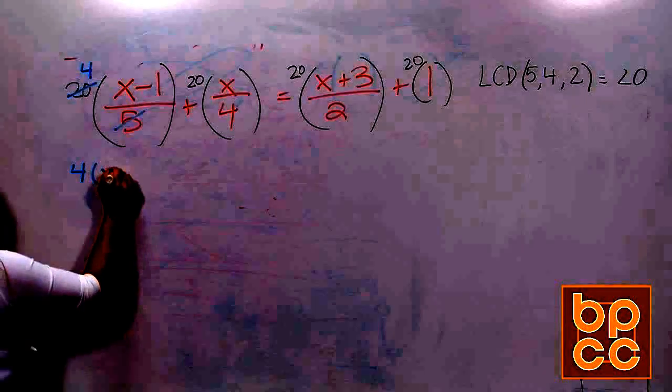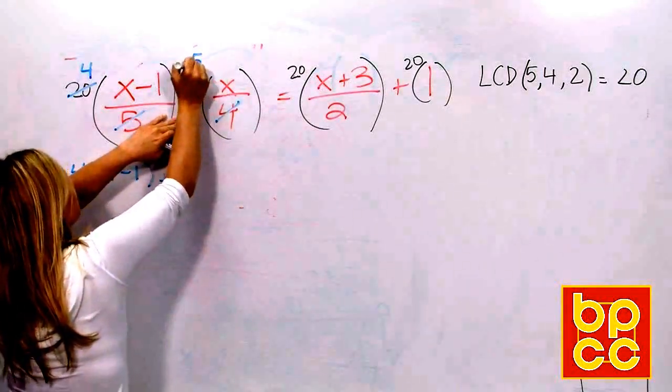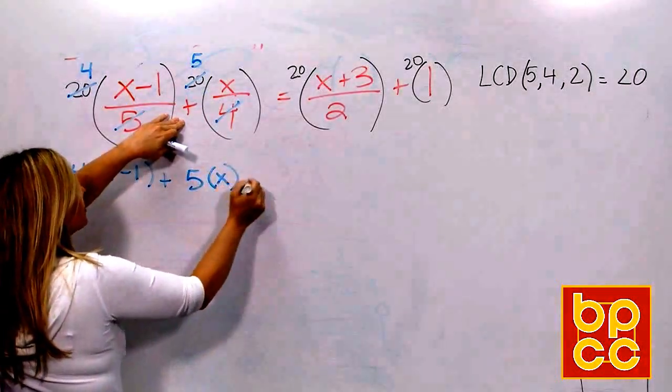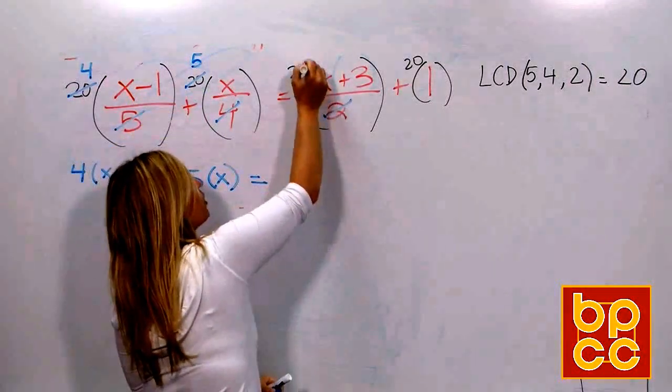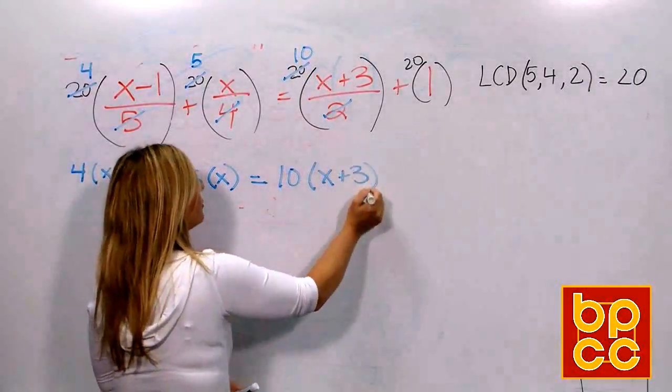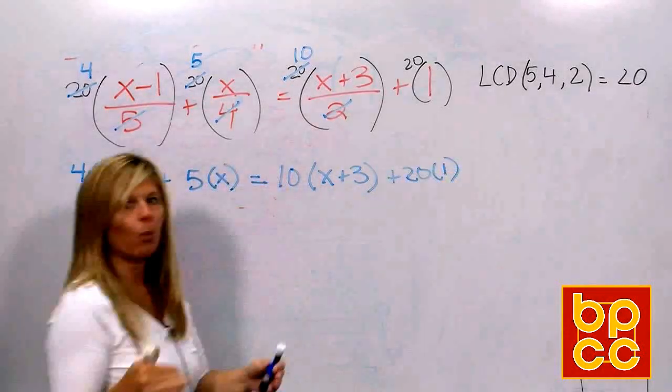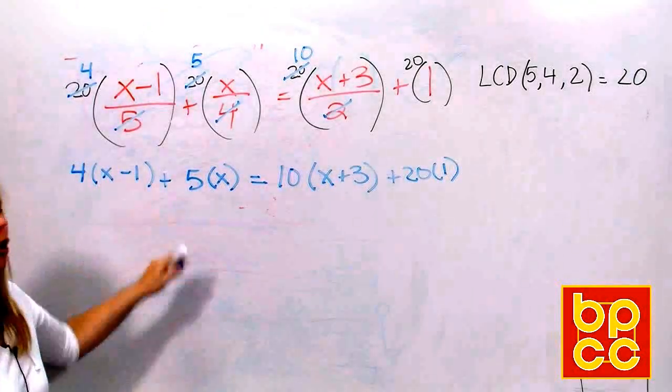You could do the work and do 20 times this first, but why do that? Multiplication and division, mom and dad are equal. It doesn't matter what order, so we're going to do always the division first. 5 goes into 20 4 times. That leaves us 4 parentheses x minus 1. No more fraction. Bring down your plus. 4 goes into 20 5 times. That's 5 parentheses x. Bring down your equals. 2 goes into 20 10 times. That's 10x plus 3. And then over here, there is no division bar, so there's no division. We'll just bring that down.